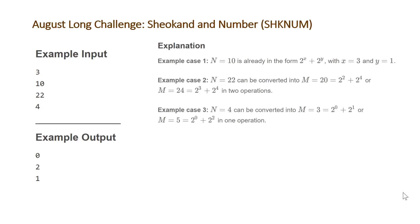Our output for these test cases should be 0, 2, and 1. For n equals 10, this can already be represented in the form 2 to the x plus 2 to the y, when x equals 3, which gives you 8, and y equals 1, which gives you 2. So 8 plus 2 equals 10. Therefore, we don't need to perform any operations.